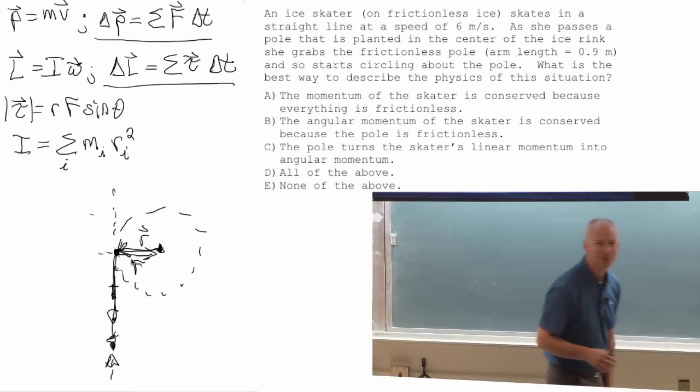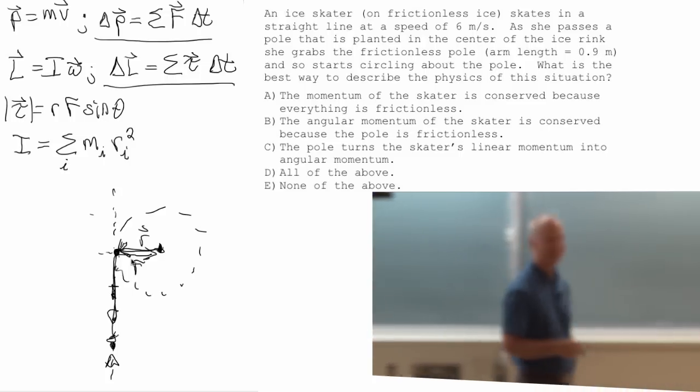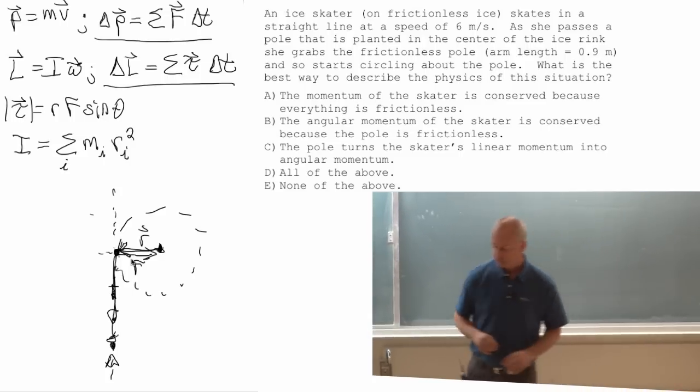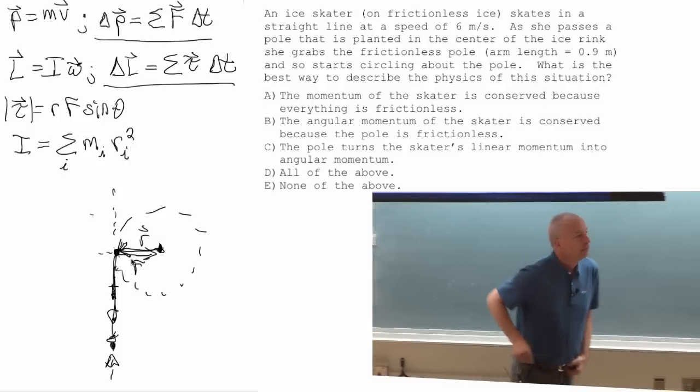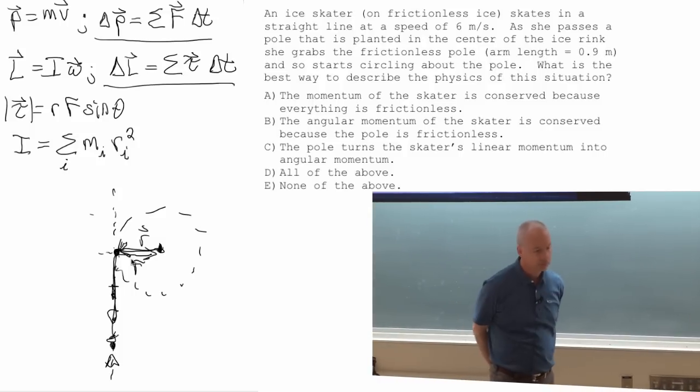There's a whole lot of stuff buried in this one question that I wanted to get to. So then what is the, if there's no torque acting on the skater, then why does the skater change angular momentum and rotate around the pole? So my claim now is that she doesn't change angular momentum. She had angular momentum the whole time.